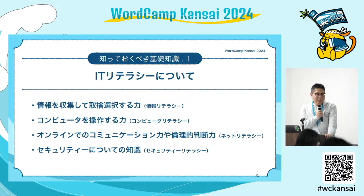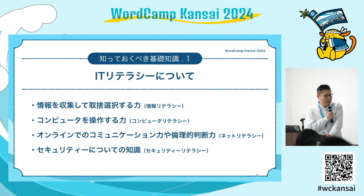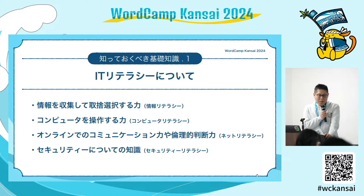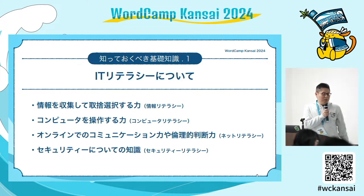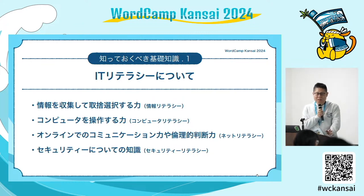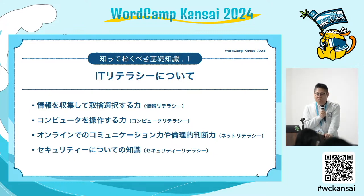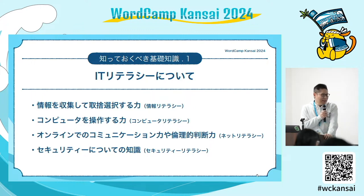基礎知識その1、ITリテラシー。情報を収集して取得・選択する力、コンピューターを操作する力、オンラインでのコミュニケーション力や倫理的判断力、セキュリティについての知識ですね。特にコンピューターを操作する力——マウス操作が全くできないよだとちょっと辛い。またオンラインでのコミュニケーション力や倫理的判断力は、情報発信するという上でそういった知識が全くないまま広報担当や更新担当になってしまうともうとんでもないことになってしまうので、最初のところにしっかりと組み込む必要があります。